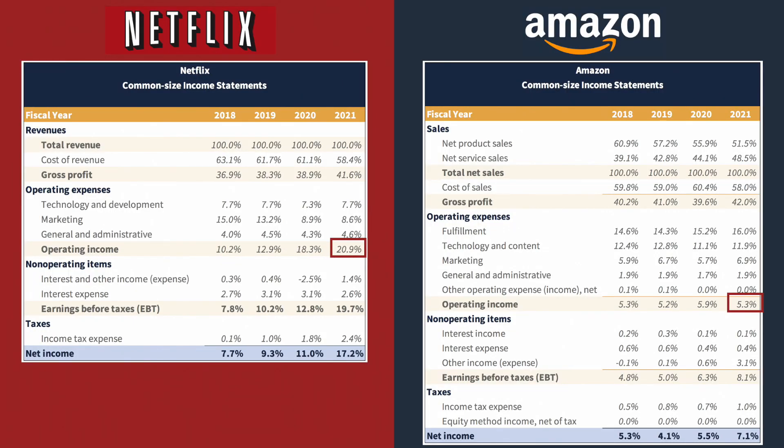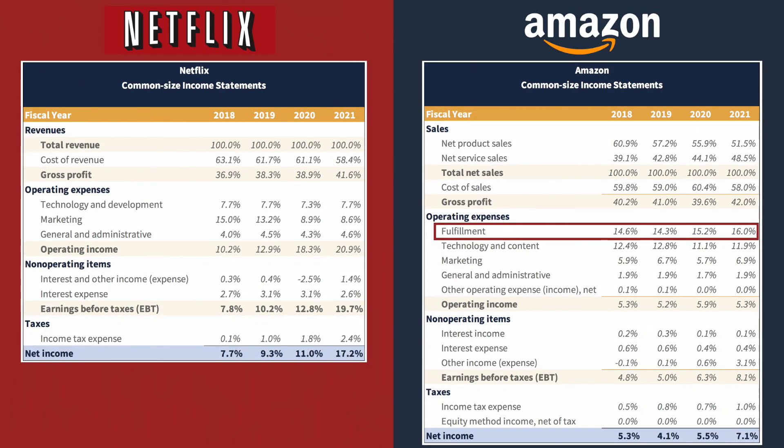And yet, Netflix had a lot higher operating margin than Amazon. How was this possible? Amazon has a significant operating expense that Netflix does not have: fulfillment costs. Fulfillment costs were 16% of Amazon's net sales in 2021.